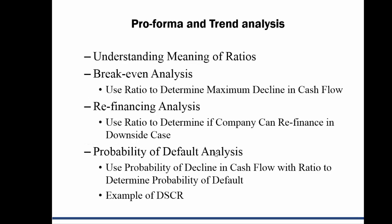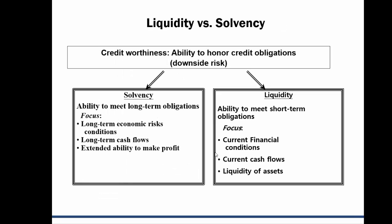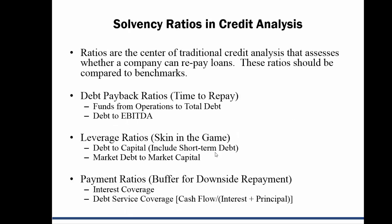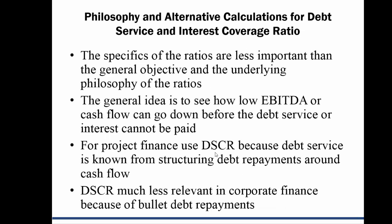We need to understand ratios and how to use them — we can put them in default analysis. This shows liquidity versus solvency. Liquidity is what people care about most of the time, but don't get obsessed with those ratios. Talk about solvency ratios — how long, skin in the game, payoff, the buffer. The specifics of the ratios matter a lot less than what they really mean. Just computing a bunch of ratios is a waste of time.